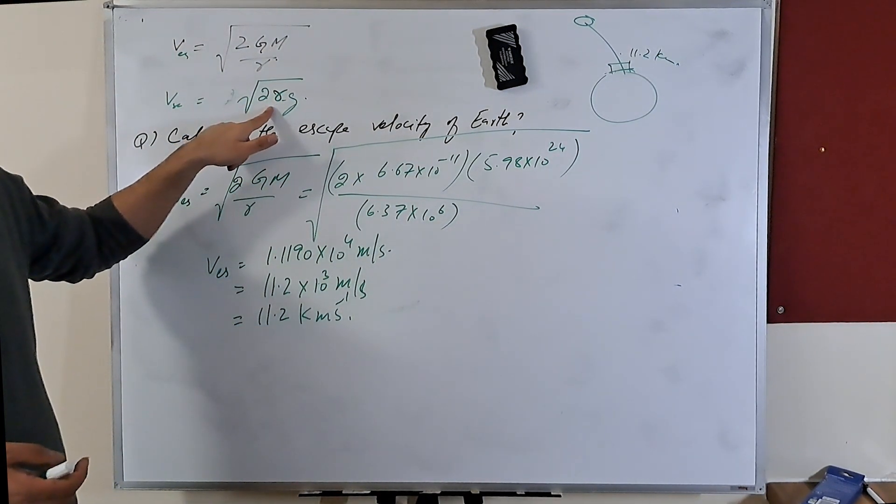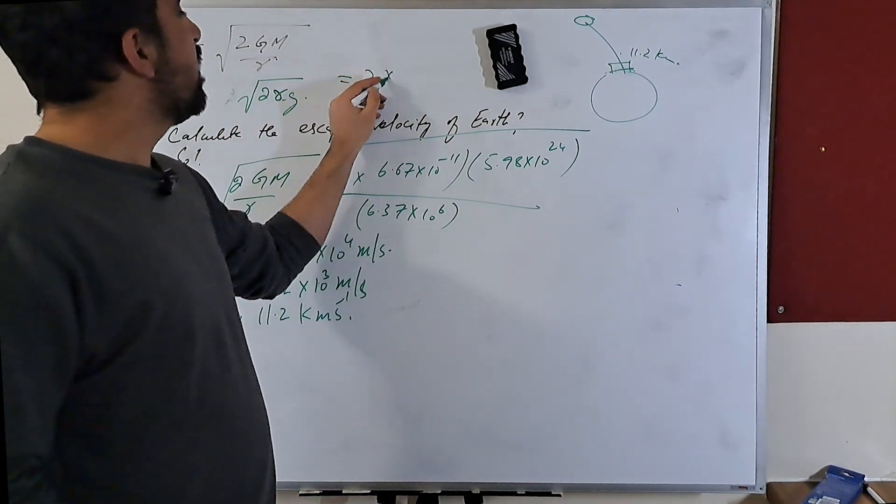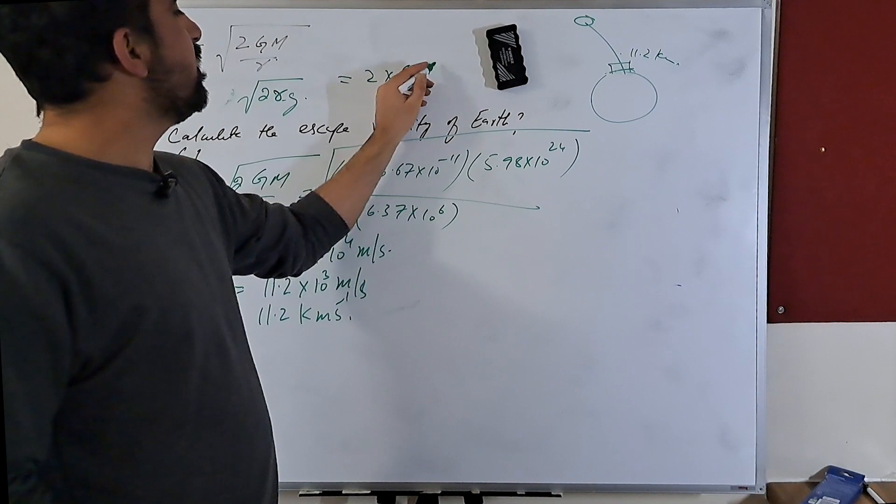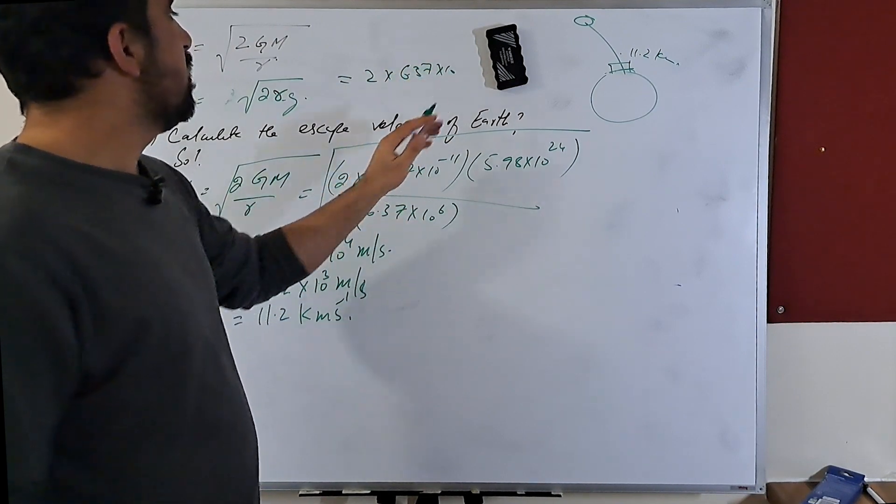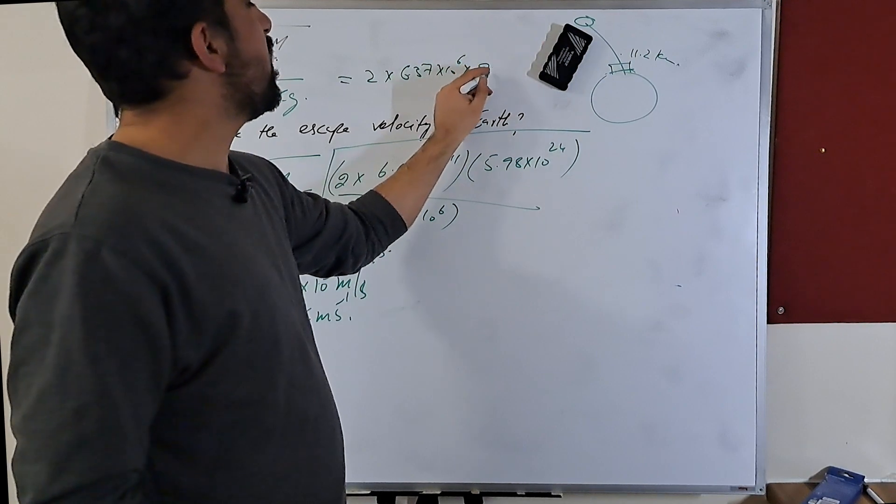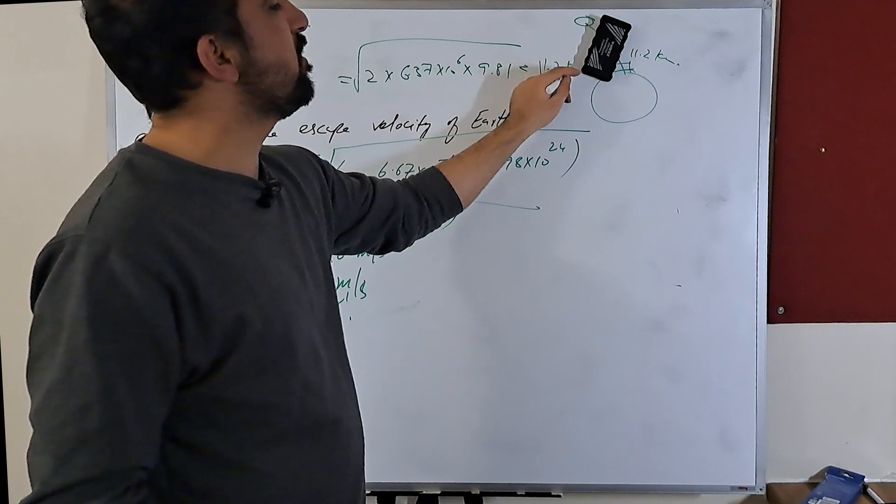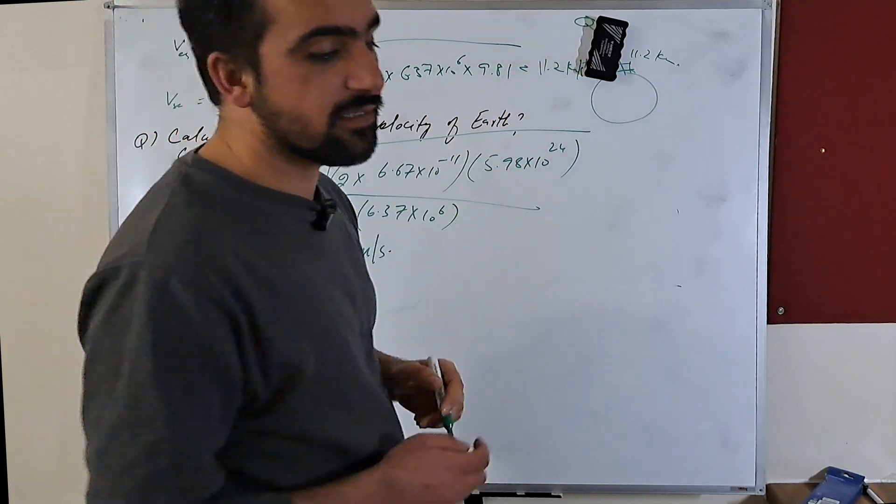You can use this formula actually to find and get the same result. If you use 2 into 6.37 times 10 to the power 6, multiply by 9.81 and take the square root, you will again get 11.2 kilometer per second. Okay?